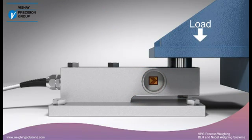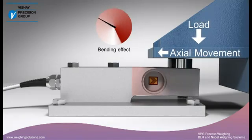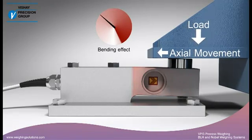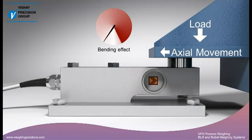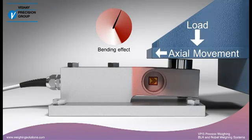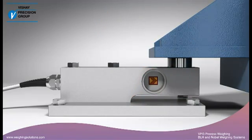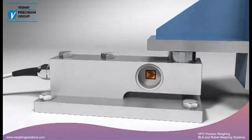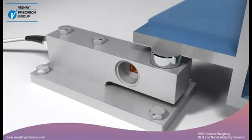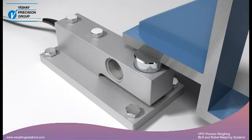In a real process weighing application, however, the bending effects can change unpredictably due to thermal or structural movement. These additional strains result in measurement errors. The side loads can be in any direction, caused by agitation, wind loads, or the flexing of structural supports and piping connections.